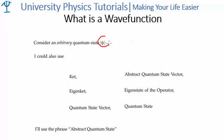In quantum mechanics, we use this symbol here to represent a vector, and that's called a ket. So we can call it a ket, or an eigenket, or a quantum state vector, or an abstract quantum state vector, an eigenstate of the operator, or a quantum state, and so on.